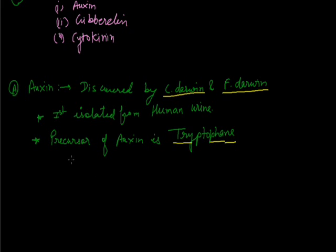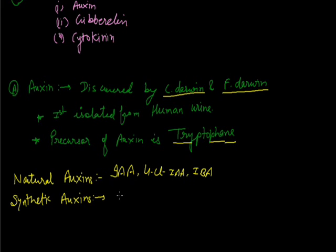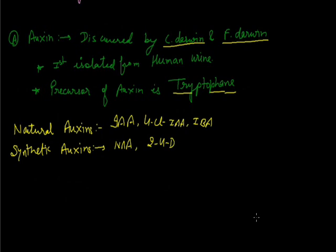Some examples of natural auxins are IAA (Indole Acetic Acid), 4-Cl-IAA, and IBA. The synthetic auxins are NAA (Naphthalene Acetic Acid) and 2,4-D, which is also used as a weedicide.